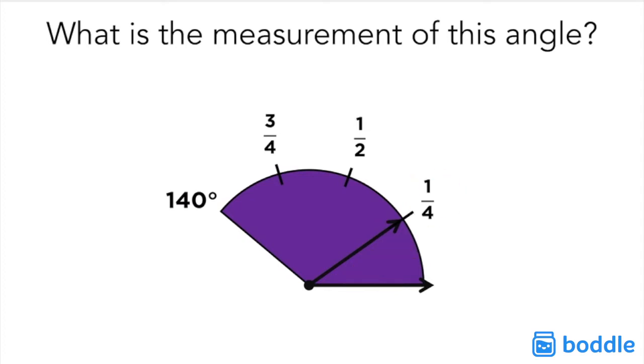The first thing we need to do to solve this is to create a multiplication problem. We need to make 140 into a fraction so that it's easier to multiply by one-fourth. So we're going to add a 1 under the 140 as our denominator. Now the problem should read 140 over 1 times one-fourth.